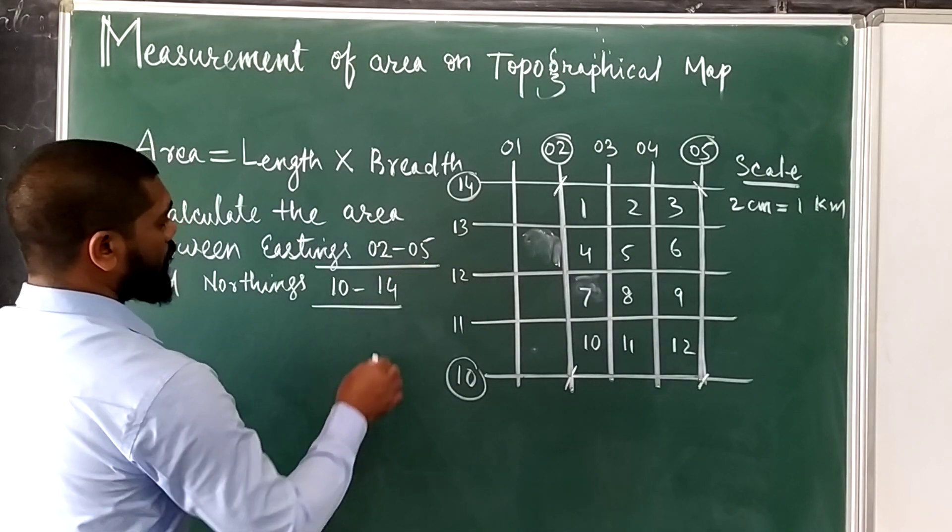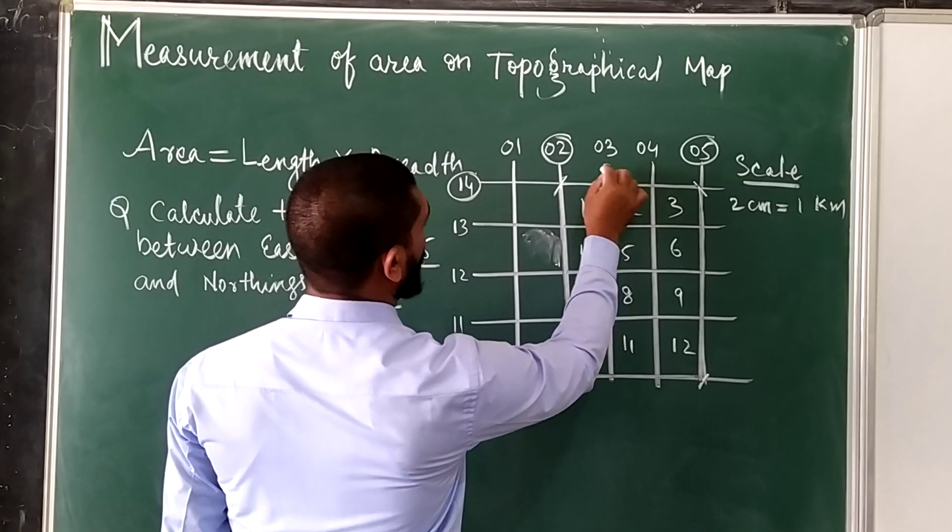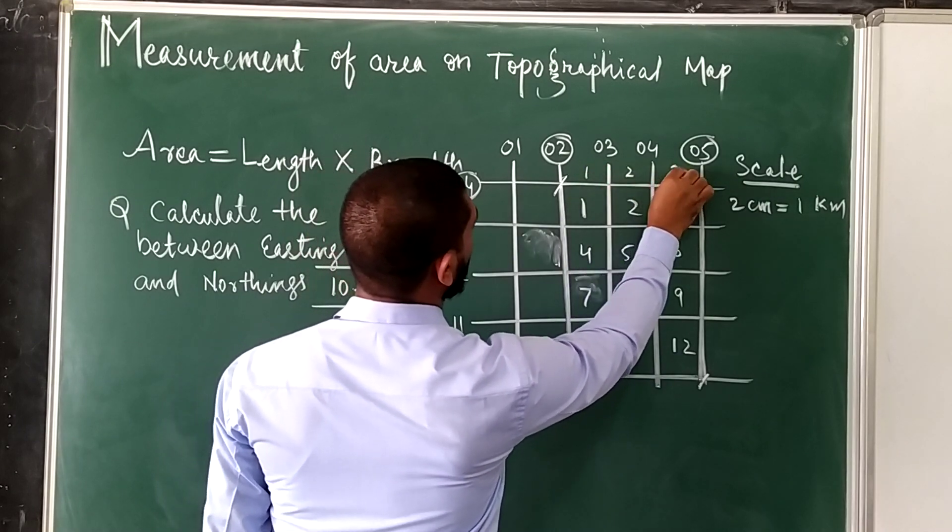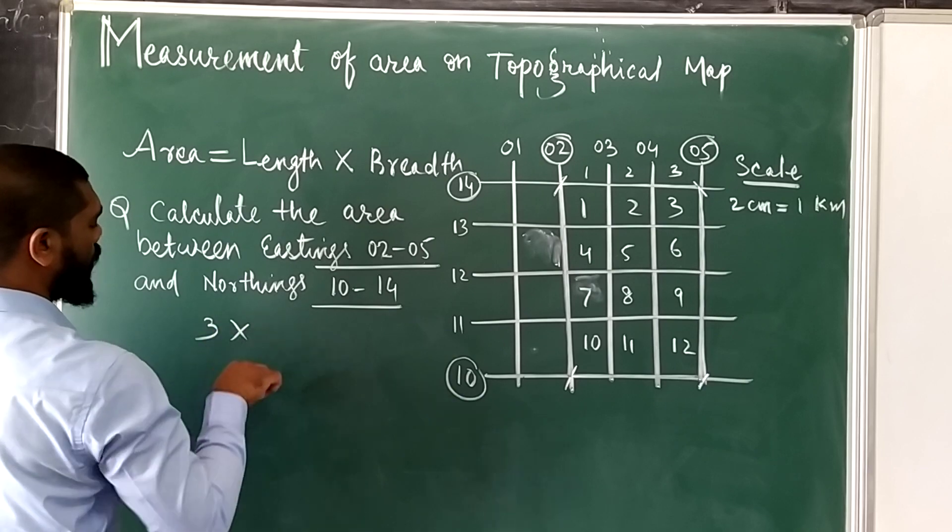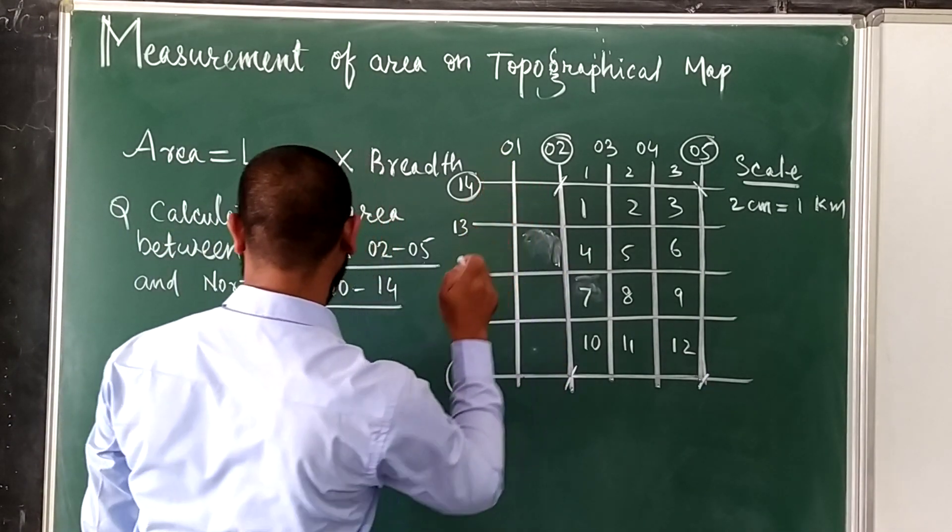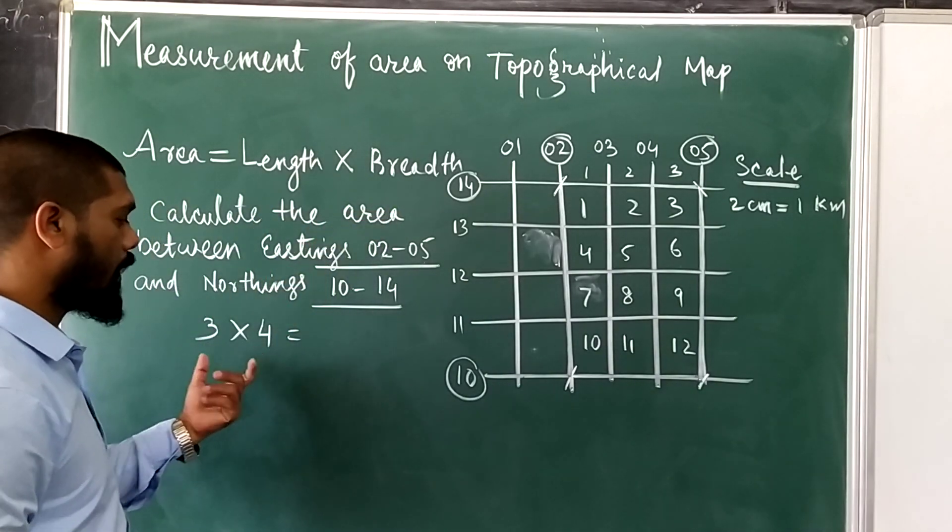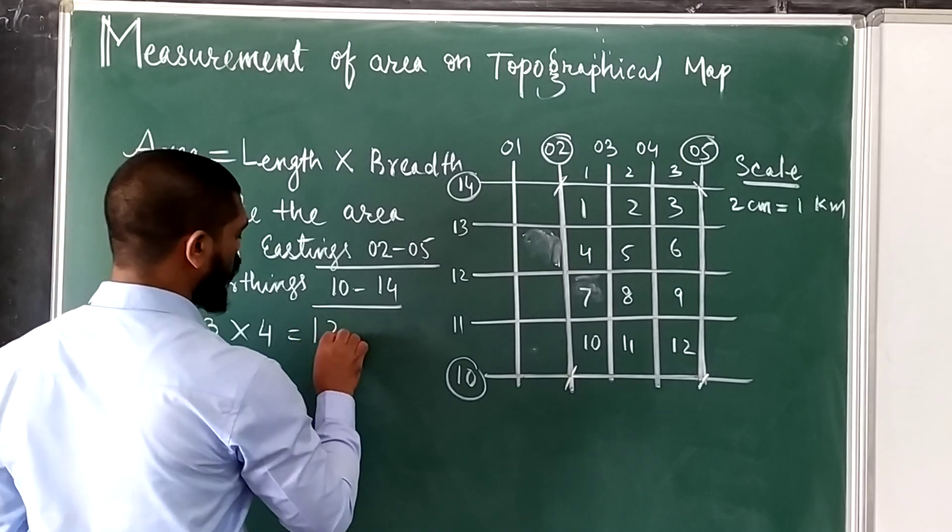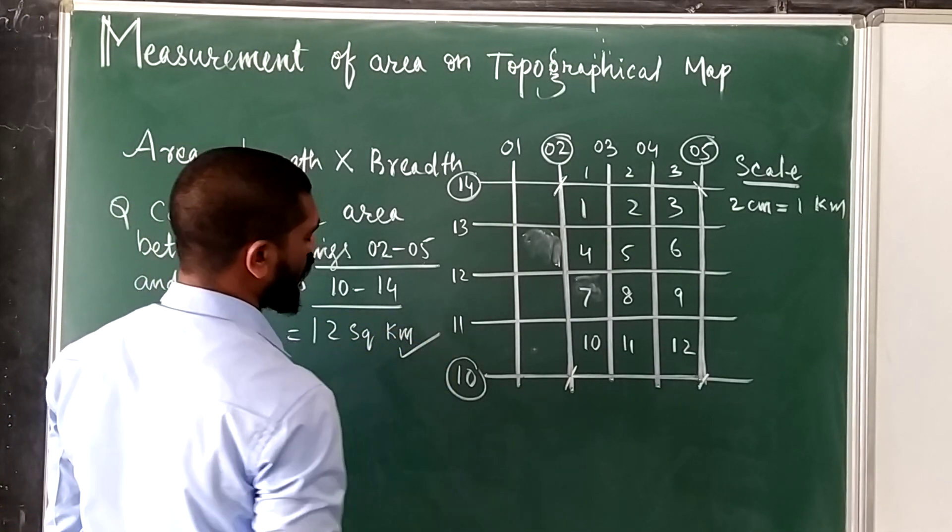To calculate, like 02 to 05, count the boxes: 1, 2, 3, these are boxes in between, so 3 multiply by 1, 2, 3, 4, 4. So this length and breadth has to be multiplied, so it will be 12 square kilometers.